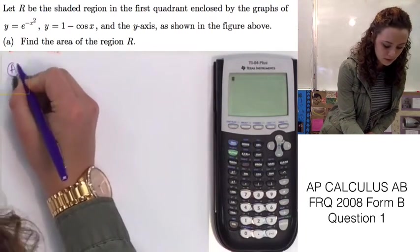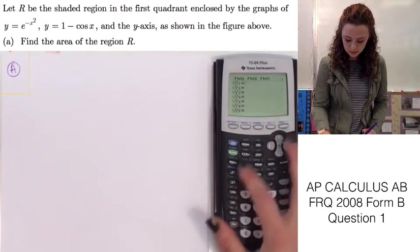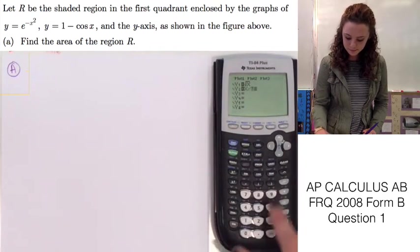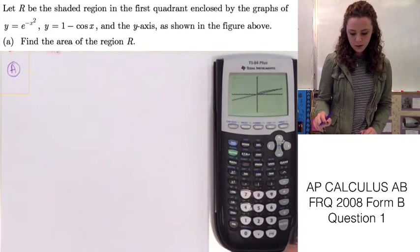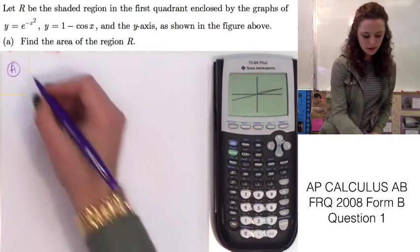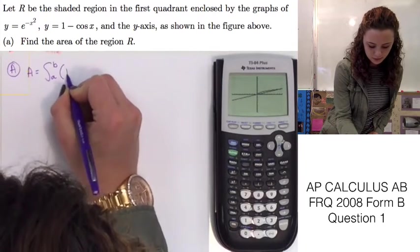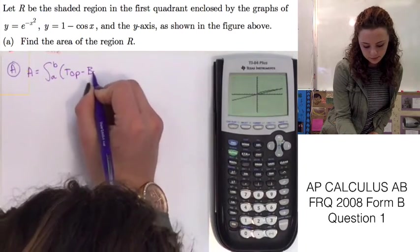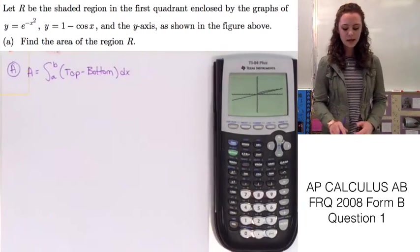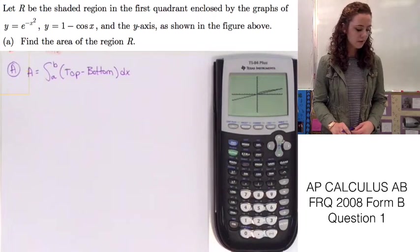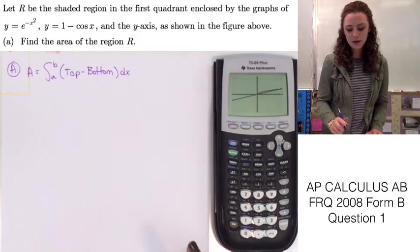Let's start by putting those two functions into our calculator. Y1 will be square root of X and Y2 will be X over 3. We'll graph that and see what this looks like. We know that to find the area, the function is A equals the integral from A to B of the top function minus the bottom function.